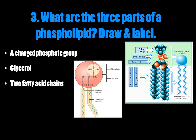What are the three parts of a phospholipid molecule? It's composed of a charged phosphate group — as you can see in the diagram, this would be the charged phosphate group here — a glycerol molecule, which would be this part here, and these two fatty acid chains, which would be here.